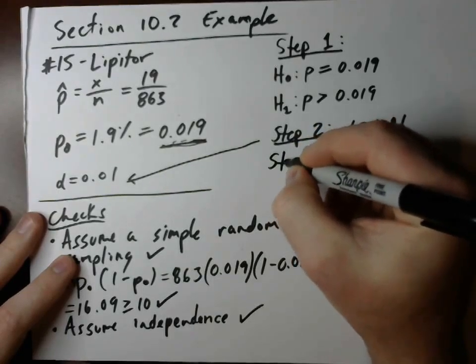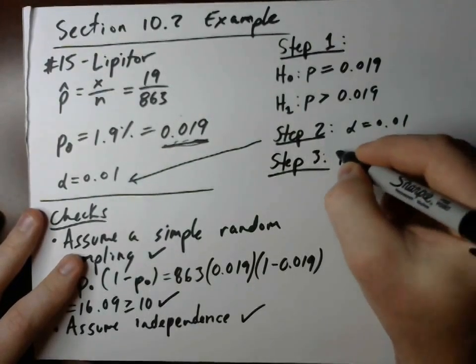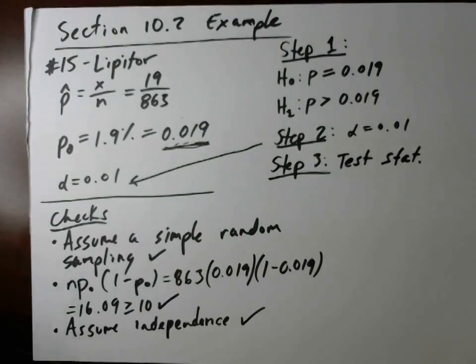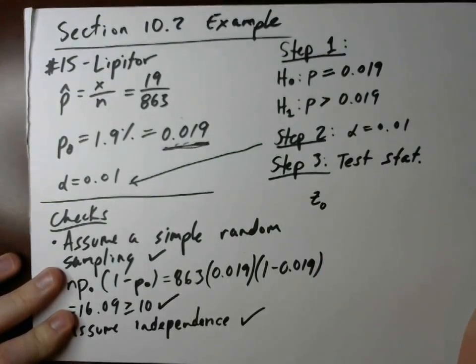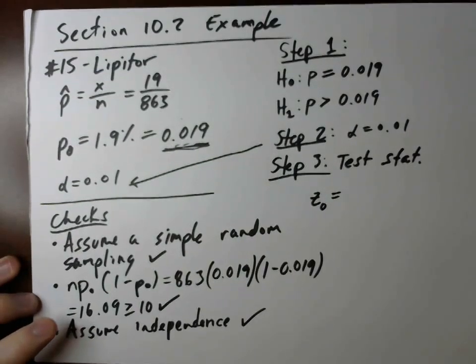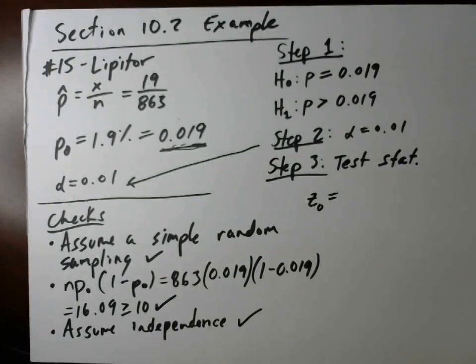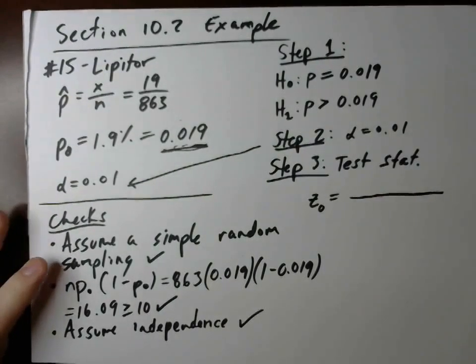Now step 3. Step 3 is where we get into the calculations. Step 3 represents our test statistic. And our test statistic always for a hypothesis testing for population proportion is a z-score value. So we call this z-naught for test statistic. Z-naught is our test statistic for a hypothesis test. What we're doing is we're comparing. We're trying to see how well the sample matches up with the claimed value. So that's why on the numerator of our hypothesis test,